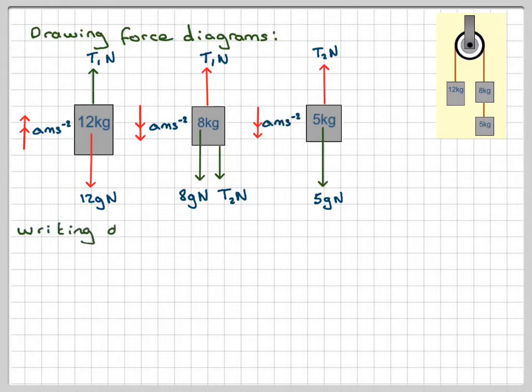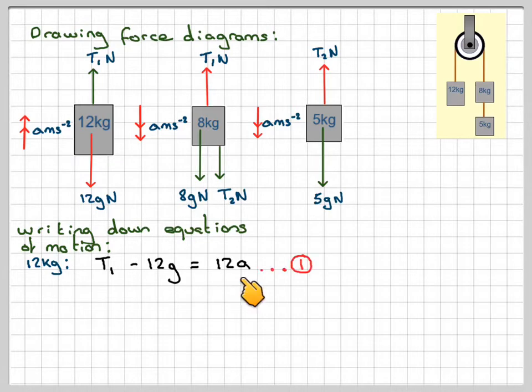So we're writing down equations of motion. So we'll start with the 12 kilogram block. So this is moving upwards. So it's going to be T1 minus 12g Newtons. Minus 12g is equal to ma. So 12 times a, we're going to call that equation 1.